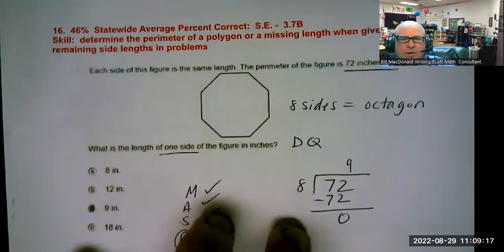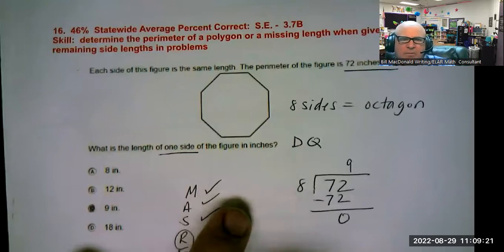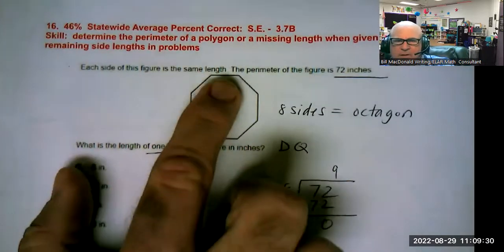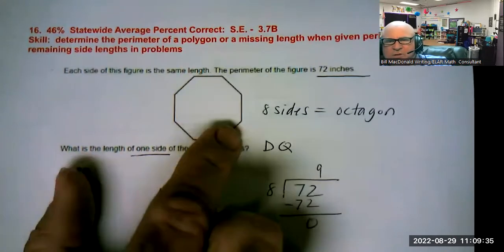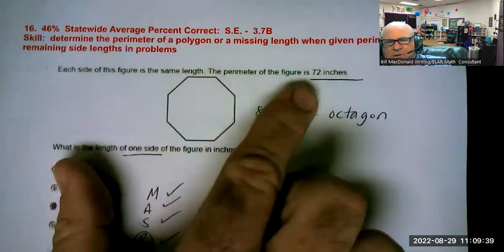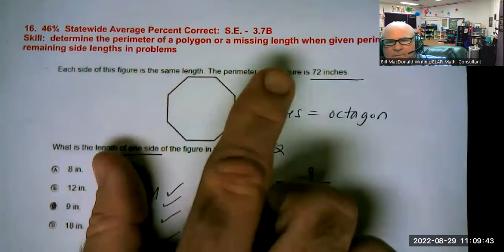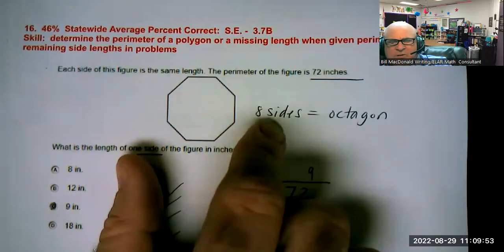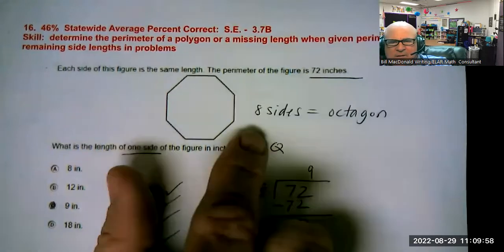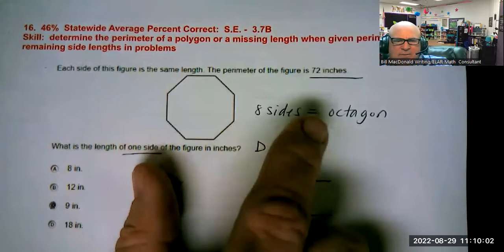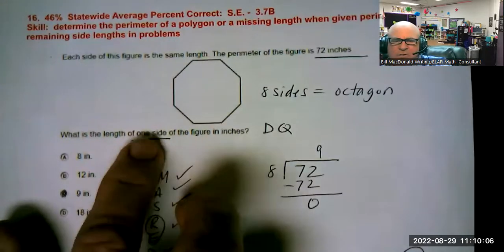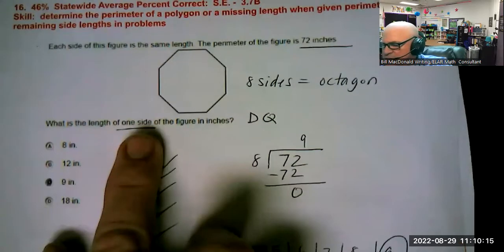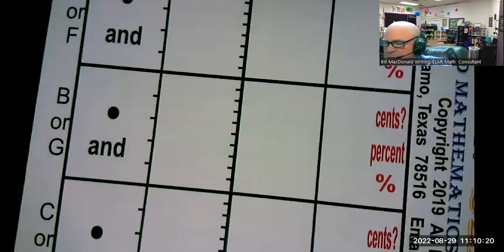The next one, for some reason we're still struggling with these perimeter and area problems. It says each side of this figure called an octagon is the same length, period. The perimeter, add up all sides, is 72 inches, period. Since they gave us the perimeter you can either subtract to figure out how much each side has, or you can say well 72 inches, keyword is different than eight sides because it's an octagon. So in order to find out what is the length of one side, I have DQ there, do we divide if the word each or one is in the question?